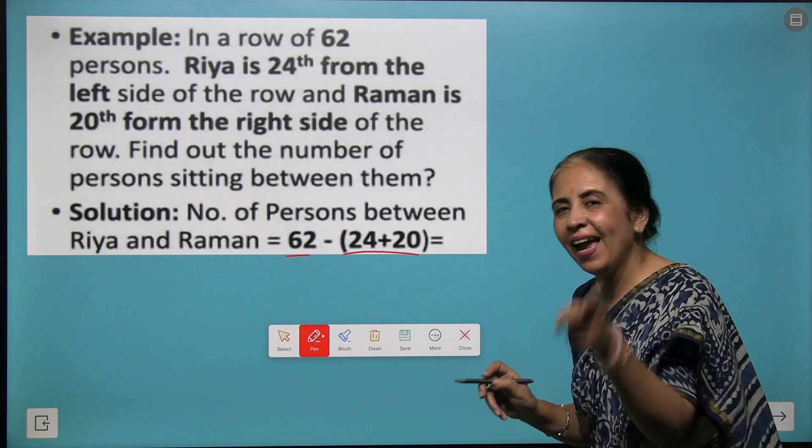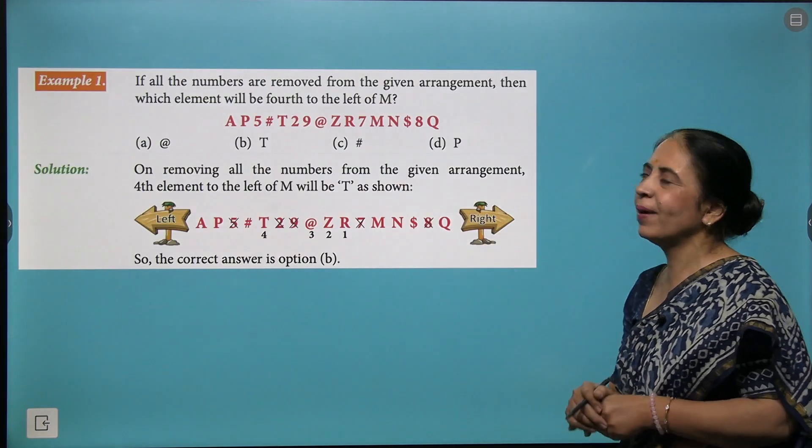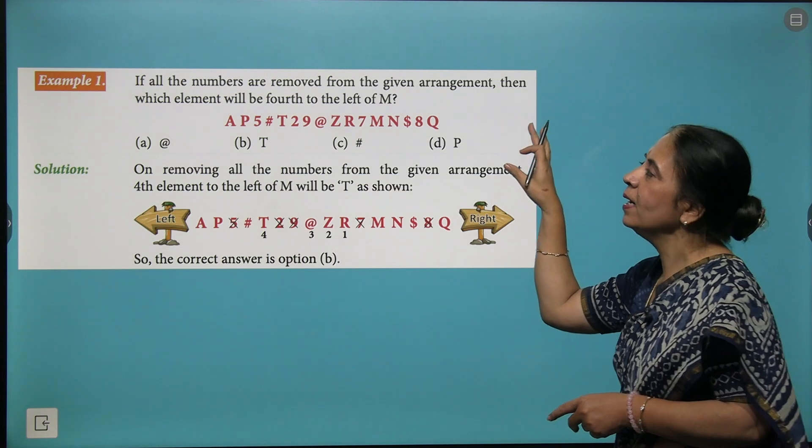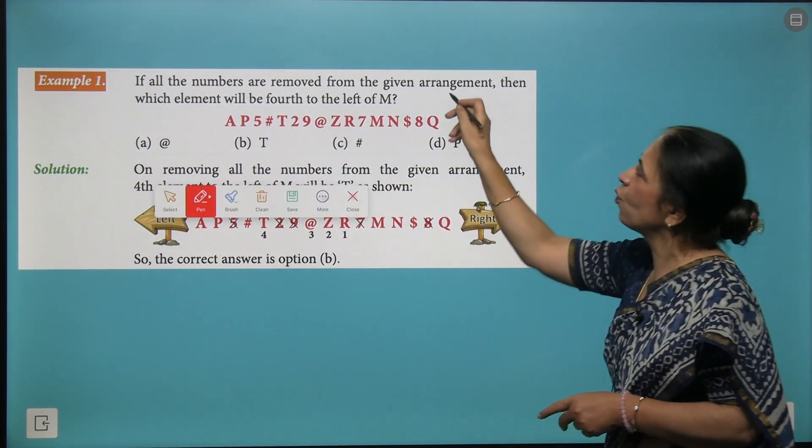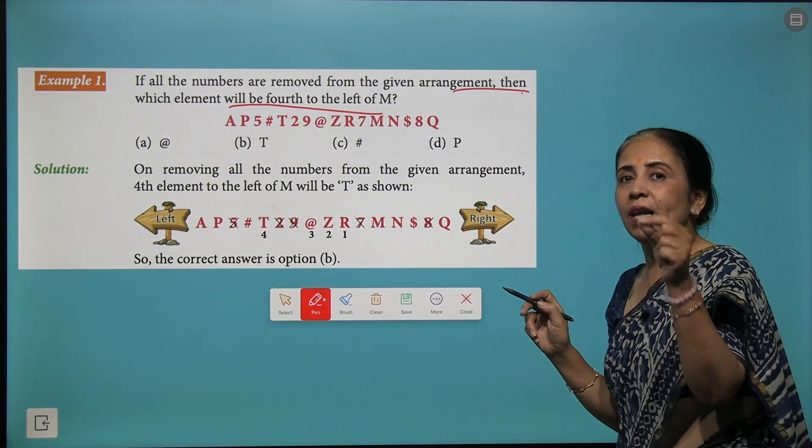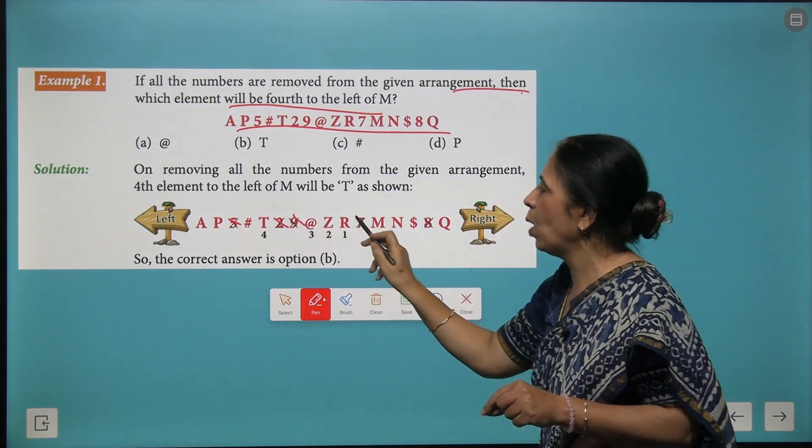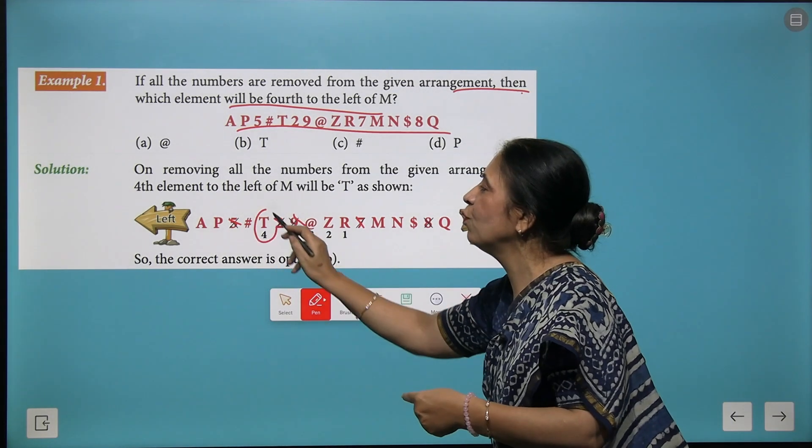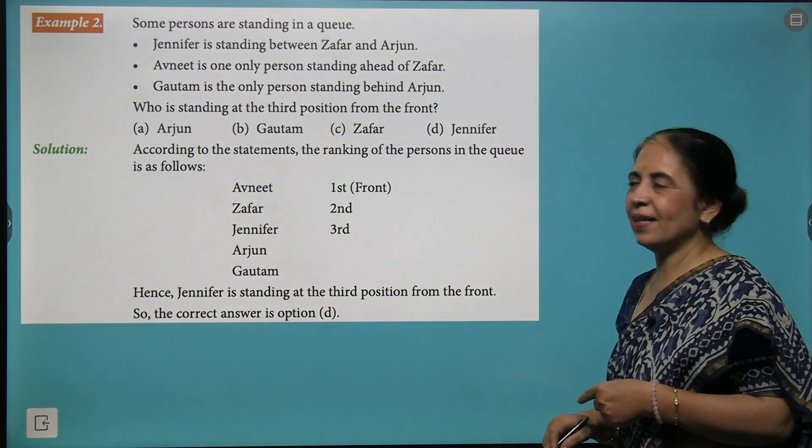That's cool. Here we move ahead with another example. Now we have a few alphabet, numbers, and special characters here. The question says if all the numbers are removed from the given arrangement, then which element will be the fourth to the left of M? This is the arrangement. We first cut down all numbers. Starting from R, we move towards left, and the fourth alphabet becomes T. So B is your right answer.